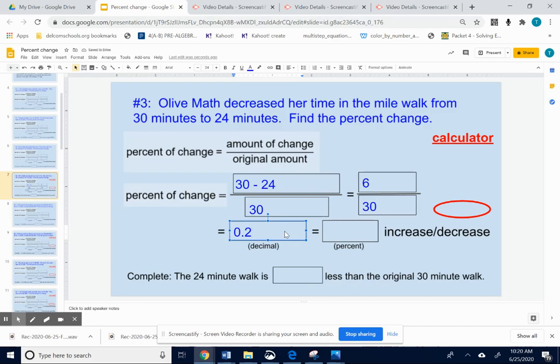Okay, so that's the decimal. Change that to a percentage by moving the decimal point two places to the right. So that's going to be a 20% change.